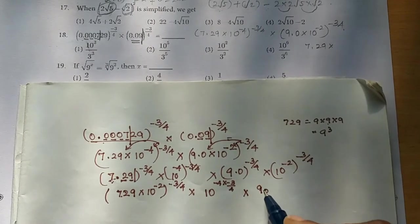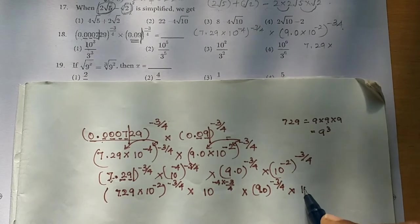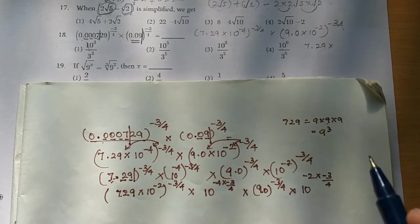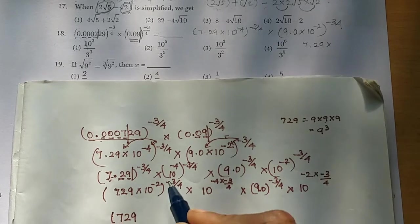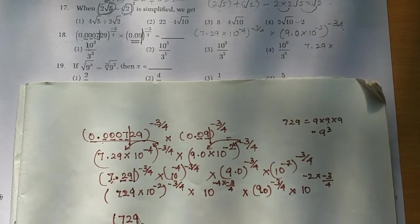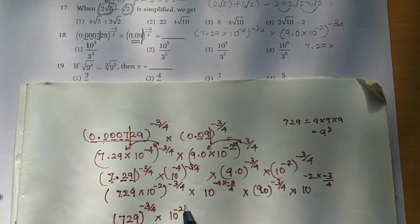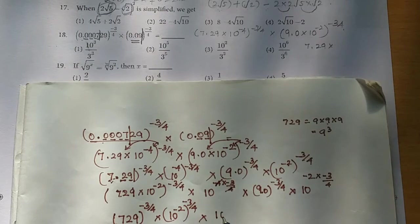So 9.0 the whole power minus 3 by 4, into 10 power minus 2, into minus 3 by 4. This power of power — we multiply. So 7.29 power minus 3 by 4 into 10 power minus 2, the whole power minus 3 by 4.